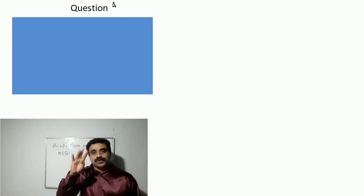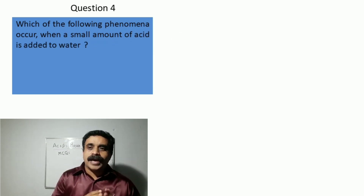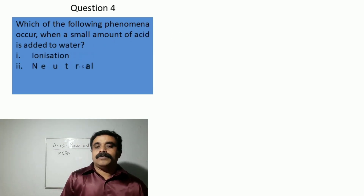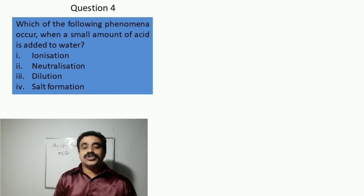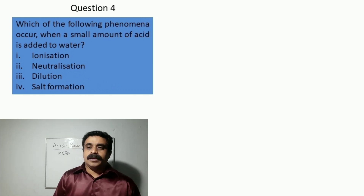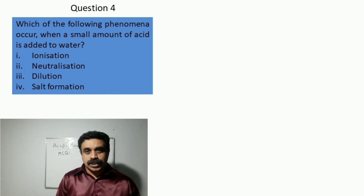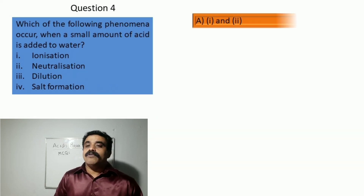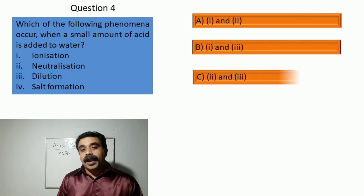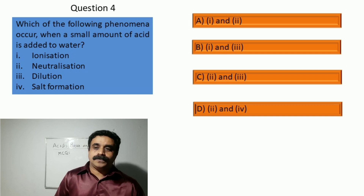Question number four: which of the following phenomena occur when a small amount of acid is added to water? 1. Ionization, 2. Neutralization, 3. Dilution, 4. Salt formation. Options are A: 1 and 2, B: 1 and 3, C: 2 and 3, D: 2 and 4.